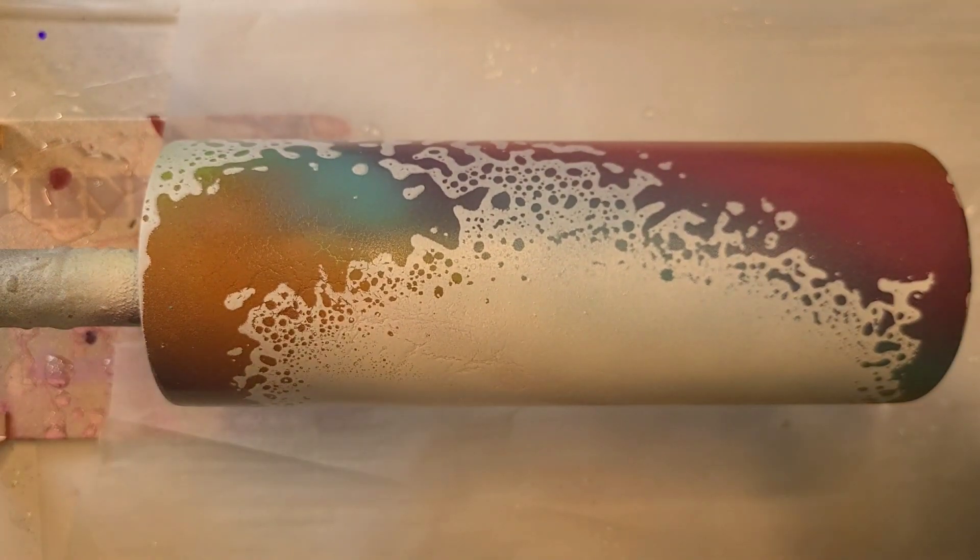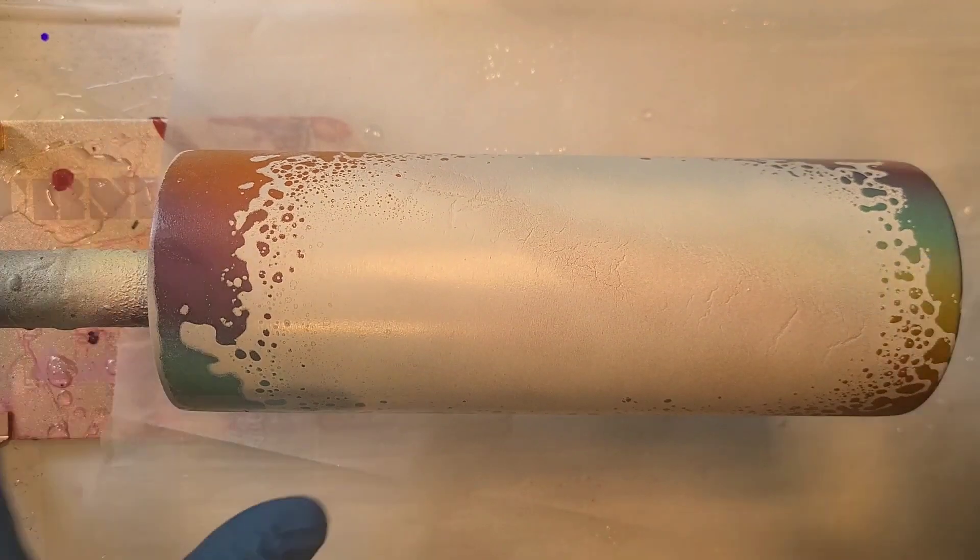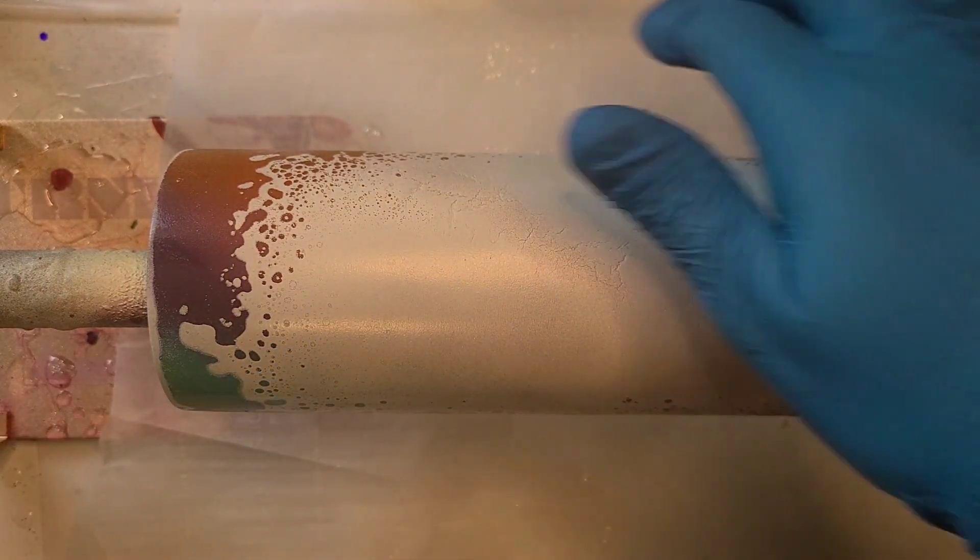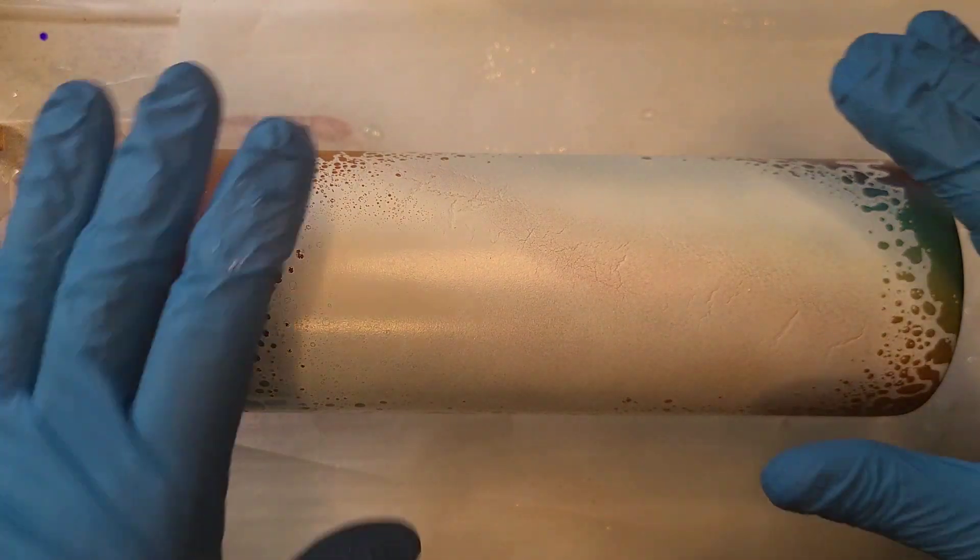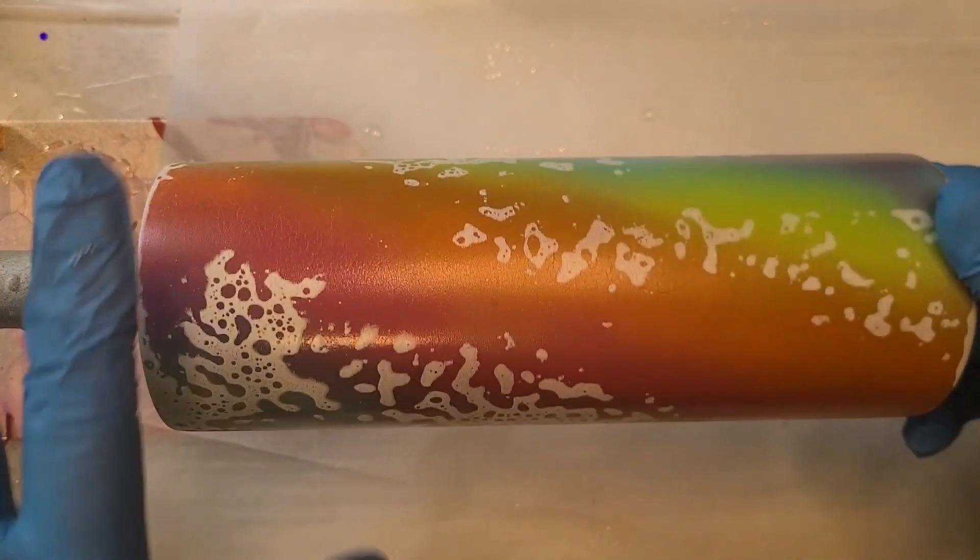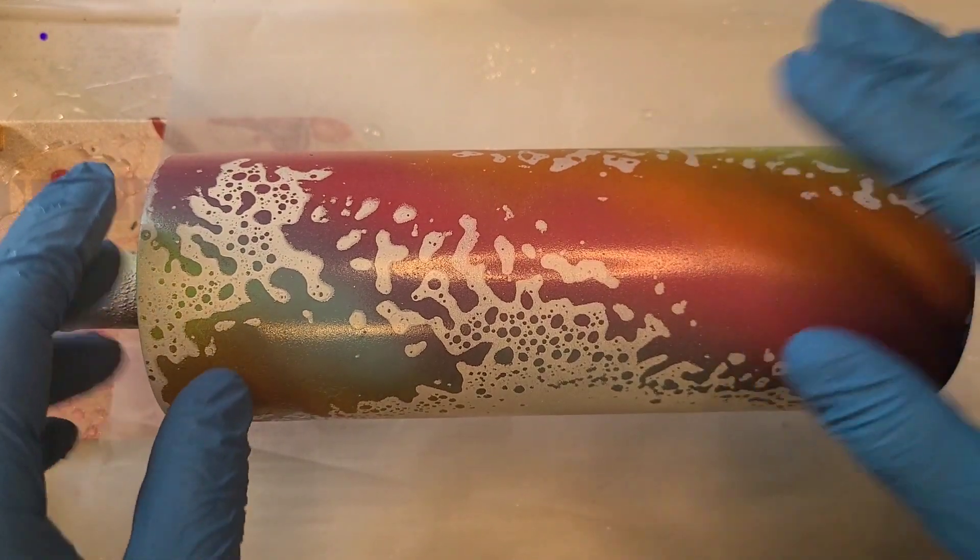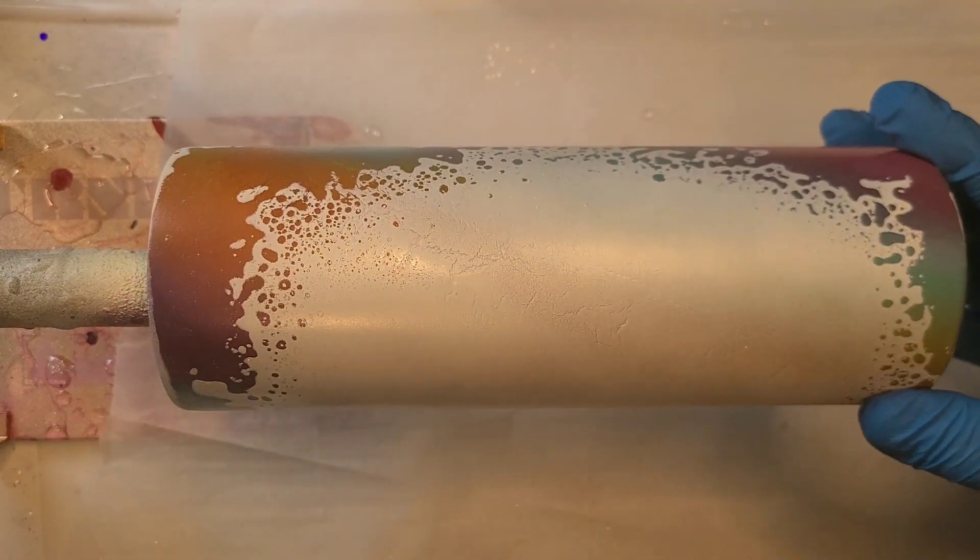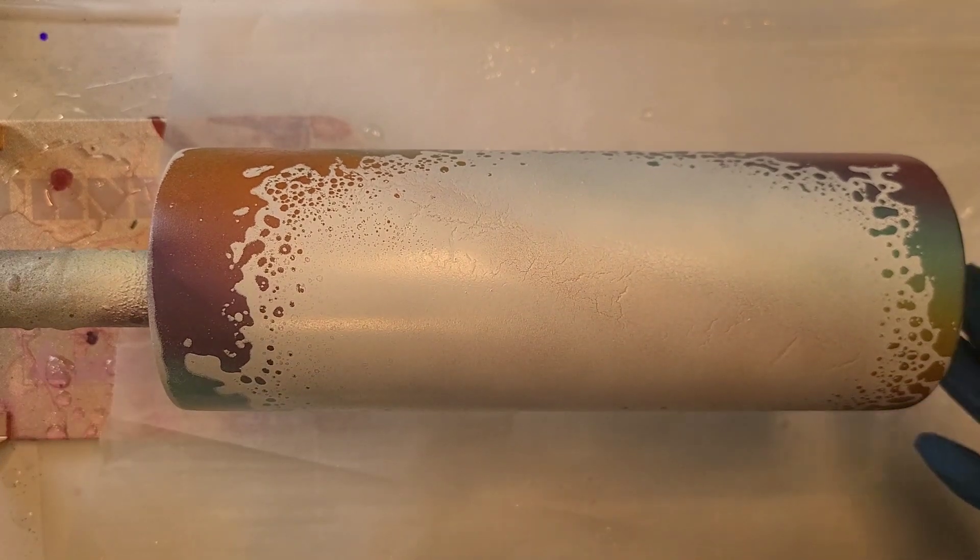Then I took my Dawn Power Wash and sprayed around where I wanted my big white spot to be and just kind of spritzed it here and there because I did want a lot of my color to still show through. And then I spray painted the whole thing white quick and then immediately rinsed it off.